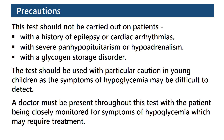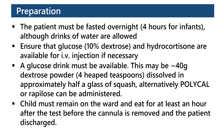A doctor must be present throughout this test with the patient being closely monitored for symptoms of hypoglycemia, which may require treatment. Preparation: the patient must be fasted overnight, but 4 hours for infants, although drinks of water are allowed. Ensure that glucose, 10% dextrose and hydrocortisone are available for IV injection if necessary. A glucose drink must be available — this may be around 40 grams of dextrose powder dissolved in approximately half a glass of squash.